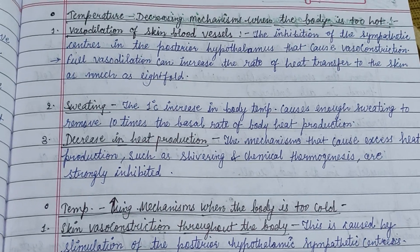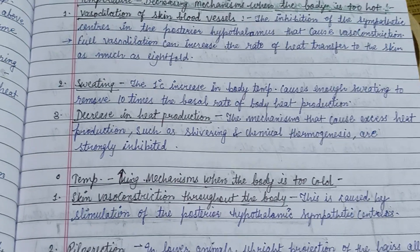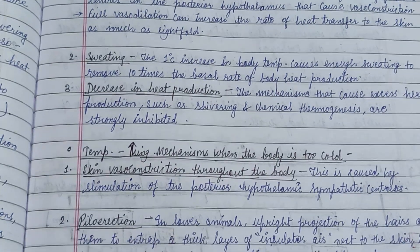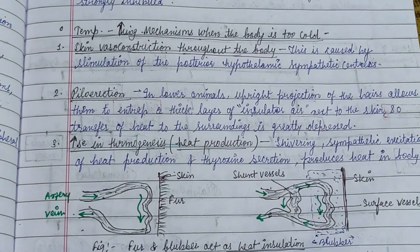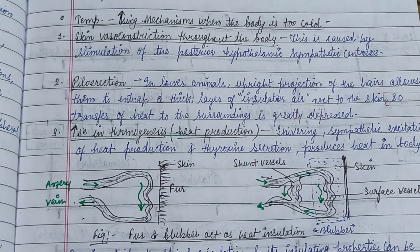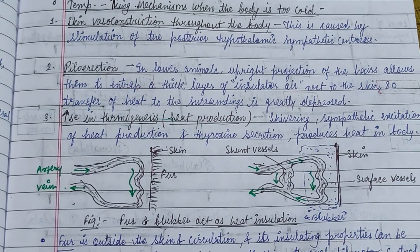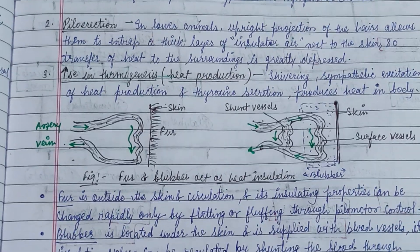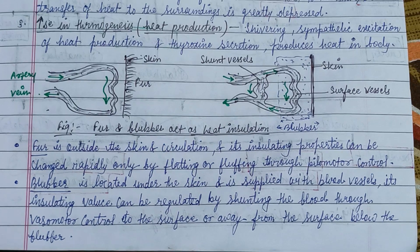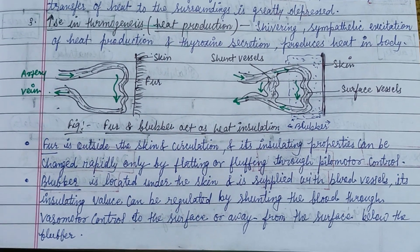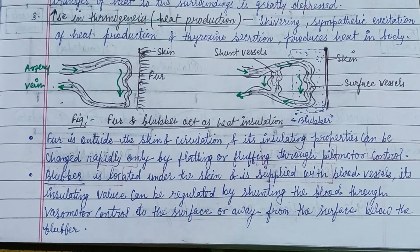Mechanisms that regulate body temperature by decreasing it include vasodilation of skin blood vessels, sweating, and decreased heat production. Mechanisms that increase body temperature include vasoconstriction throughout the body, piloerection, and increased thermogenesis and heat production. Fur, outside the skin, acts as insulation; its insulating capacity can be changed rapidly by flattening or fluffing through piloerector muscle control.